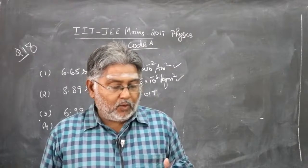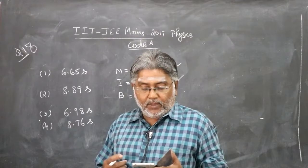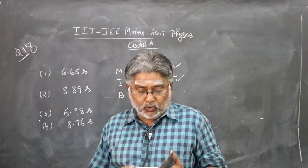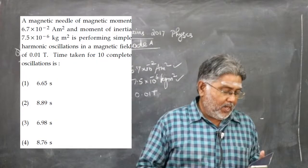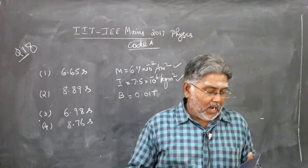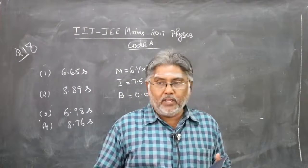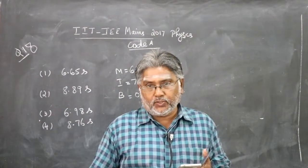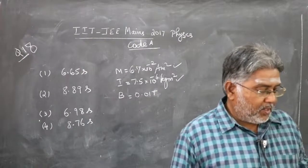Next question. Question number 18. A magnetic needle of magnetic moment 6.7×10⁻² ampere meter squared and moment of inertia 7.5×10⁻⁶ kilogram meter squared is performing simple harmonic oscillations in a magnetic field of 0.01 tesla. Time taken for 10 complete oscillations is: